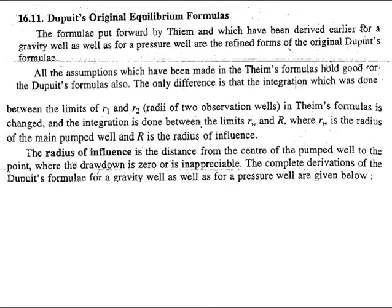But the only difference if you compare both of these formulations is that in the case of Thiem, the integration limits were between R1 and R2 in the two observation wells, but for Dupuit that integration will be between Rw and R, where Rw is the radius of the main pumped well and R is the radius of influence.